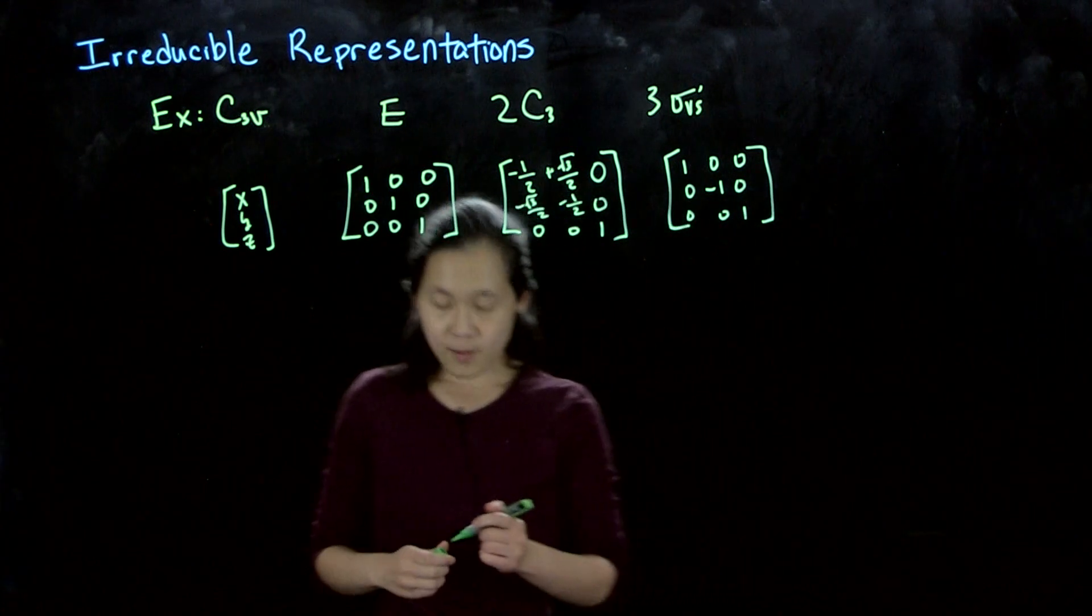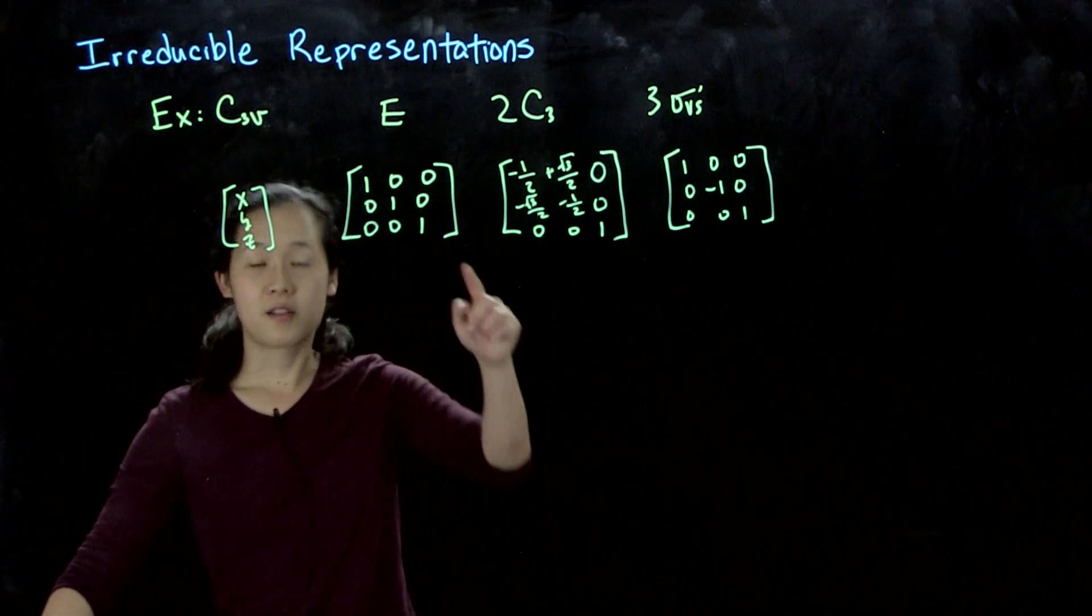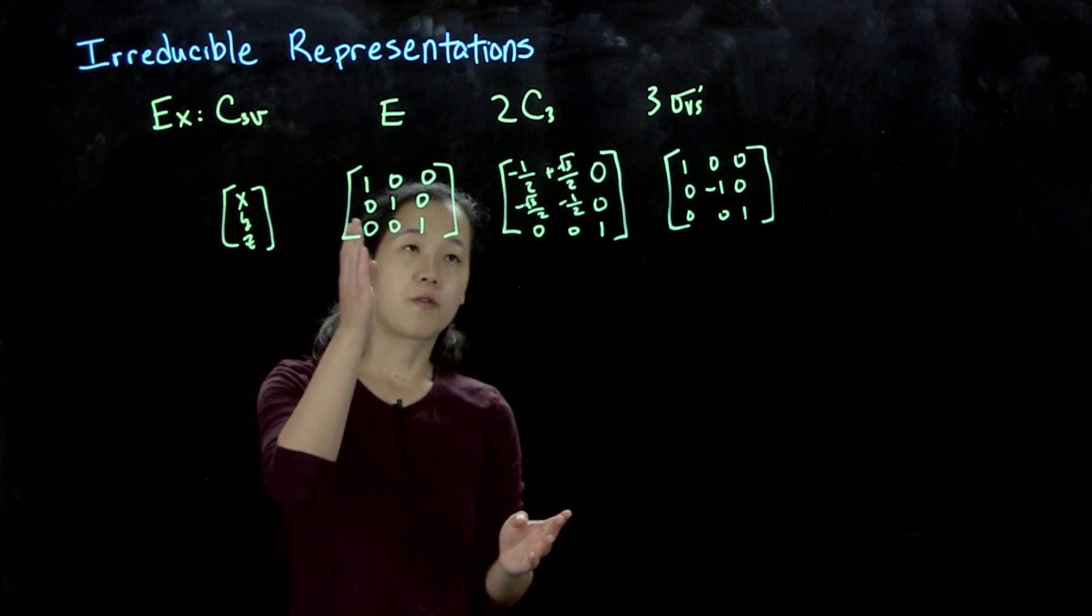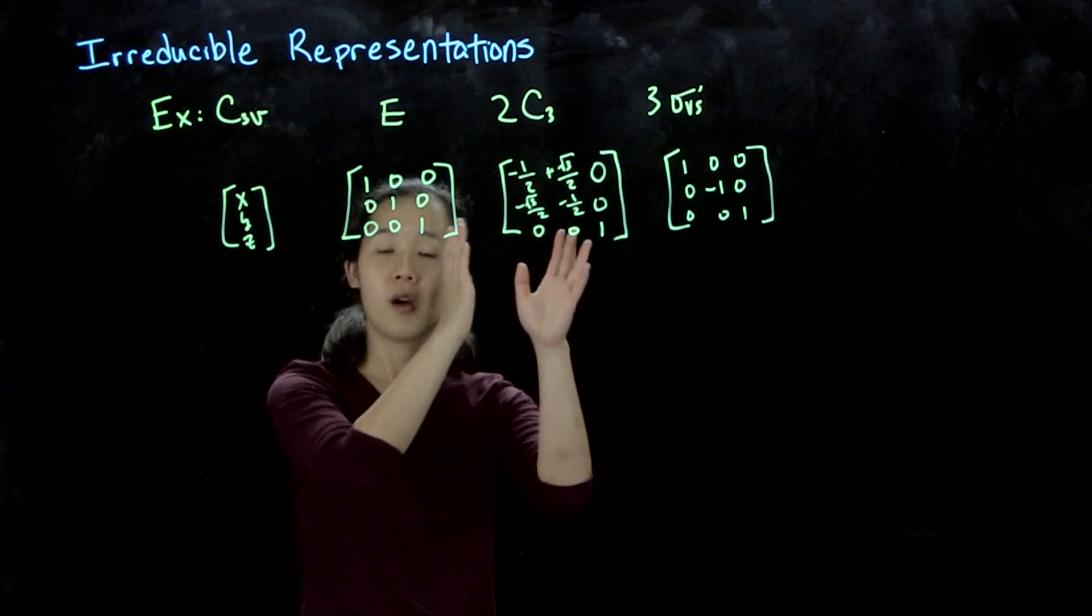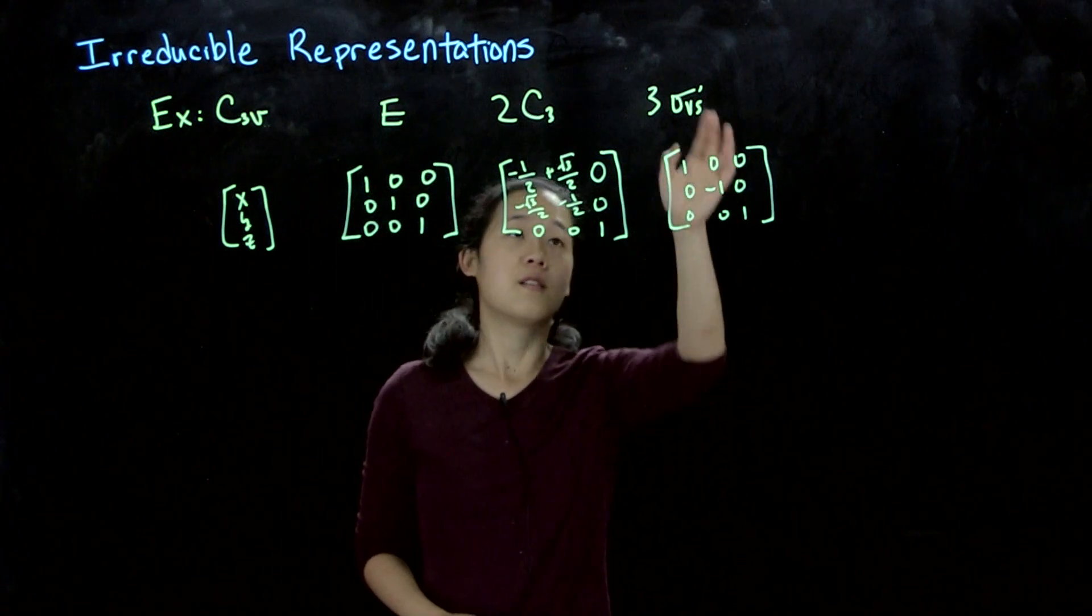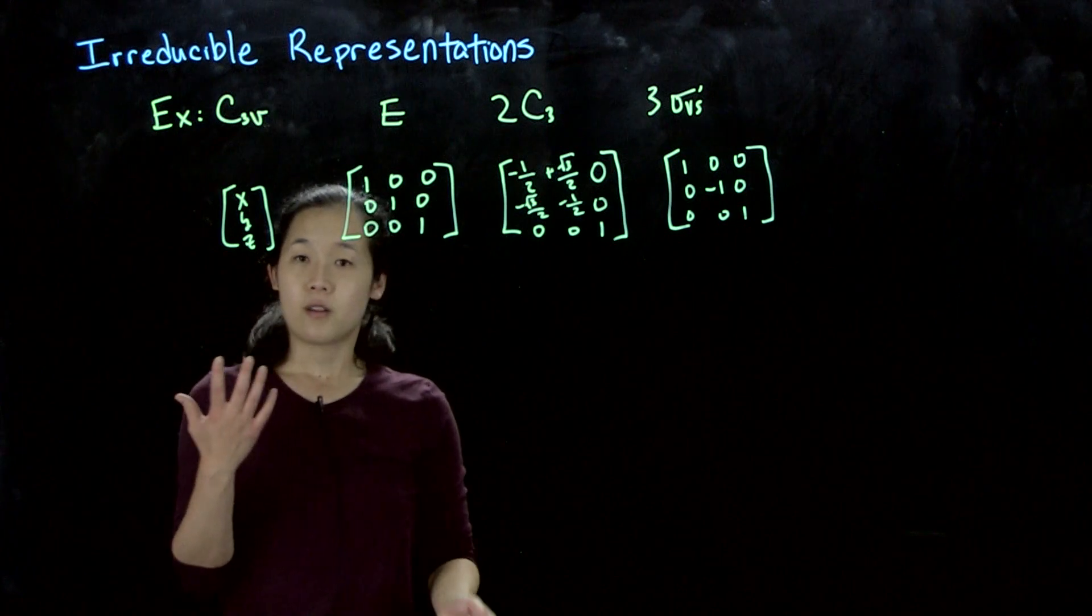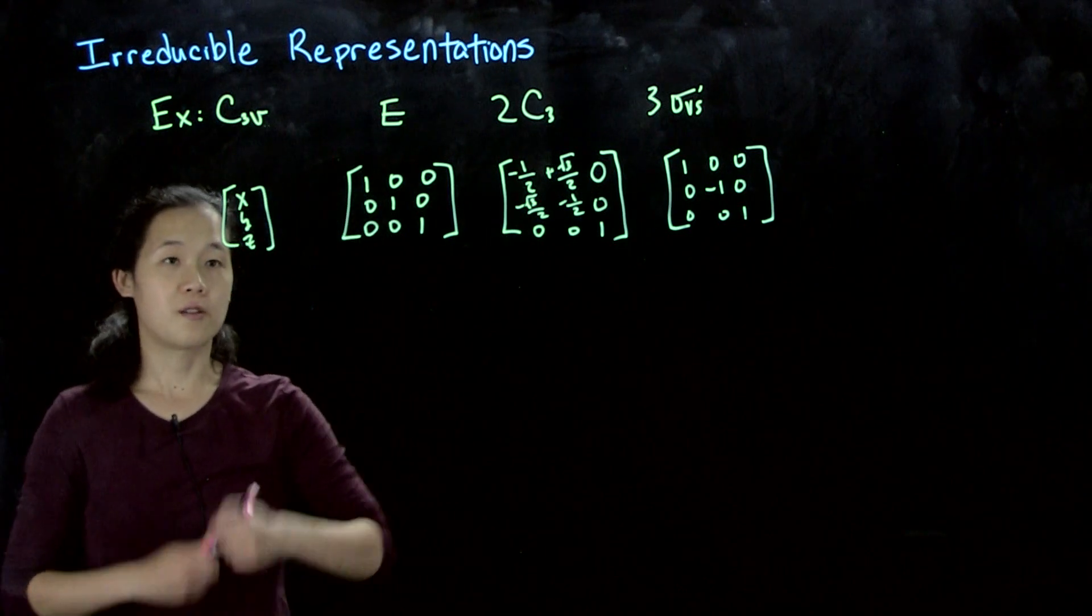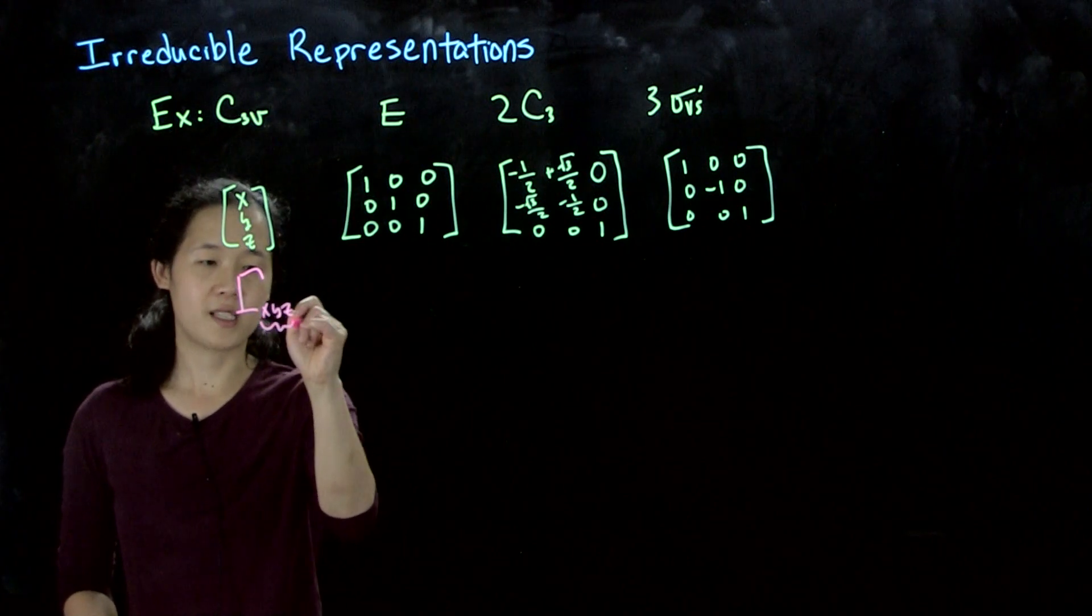We're able to represent the symmetry operations for the X, Y, Z as matrices. And then last time we talked about that the characters, which is the sum of the diagonal, the sum of the trace, is the same for each of the operations that are in the same class.